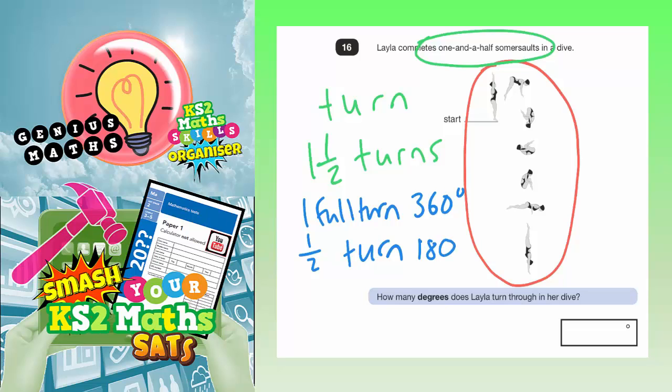So if one full turn is 360, and half a turn is 180, all we've got to do then is get these two numbers and add them together. And we'll basically have how many degrees is one and a half turns, so let's do that.